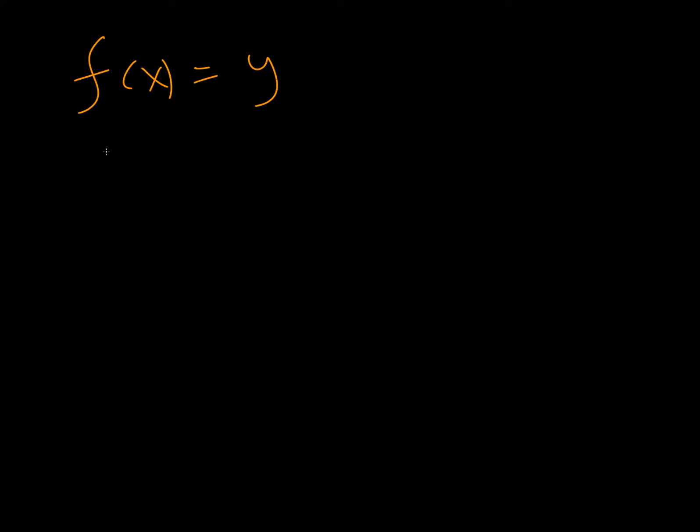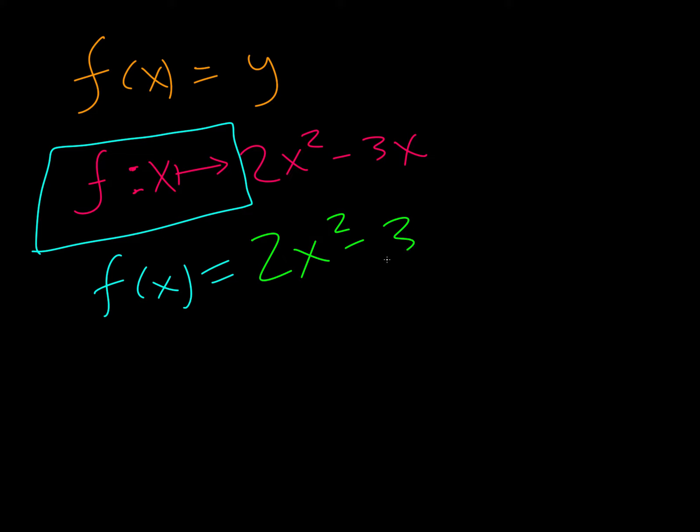Now your book uses kind of a really strange notation. Try not to get freaked out by it. So it looks like this. Now, all this weird notation means this entire piece right here is just f of x equals, and then you just have your function.